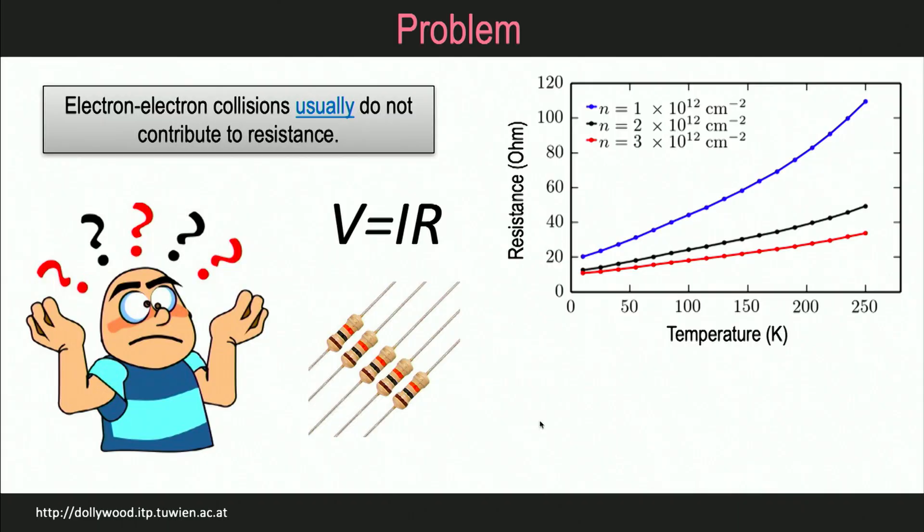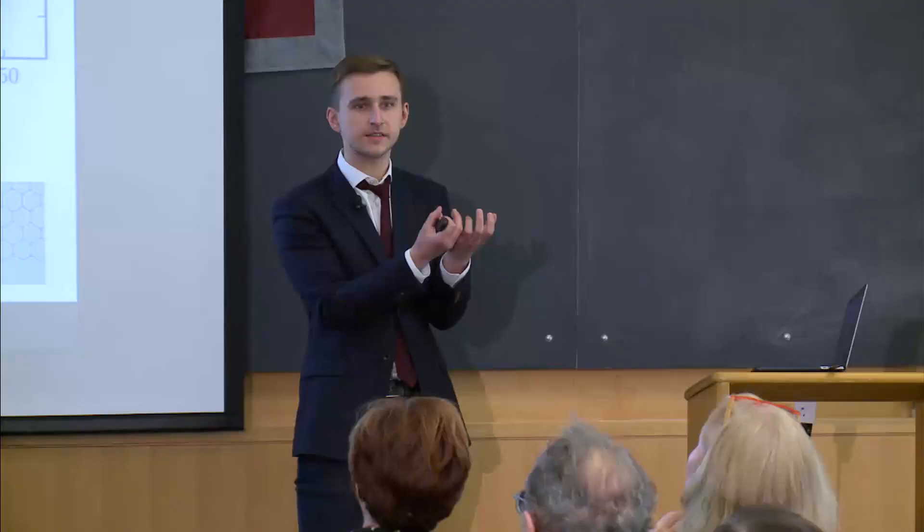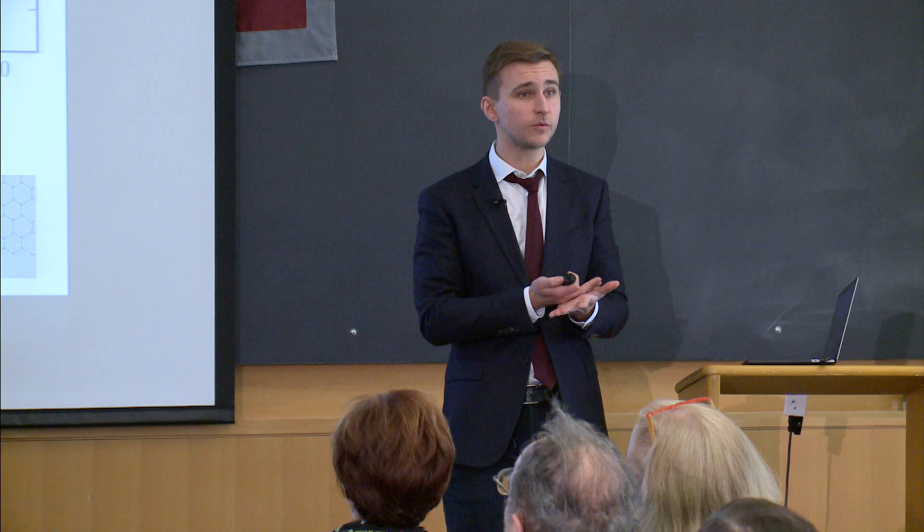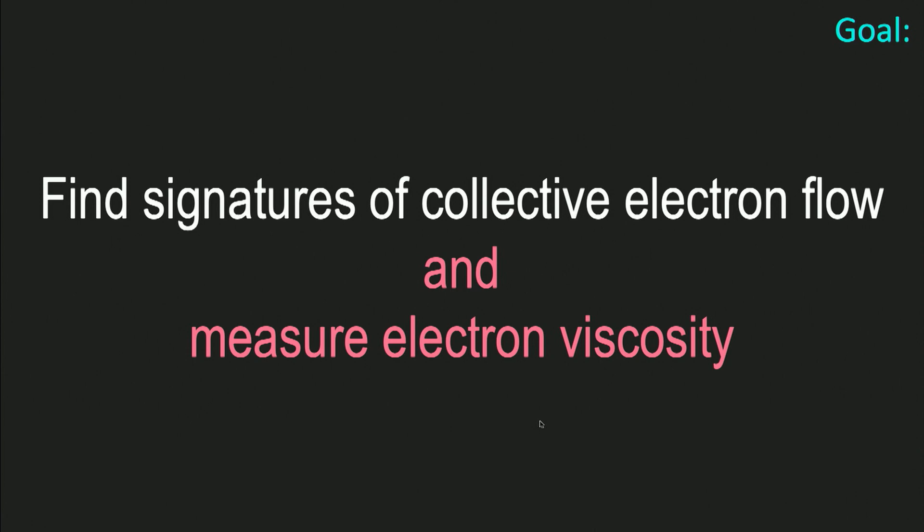Indeed, if you measure the resistance of conventional graphene device as a function of temperature, what you see is a monotonic increase, starting from 10 ohms per square at very low temperatures going to 20 to 30 ohms at room temperature. This smooth increase can be attributed to electrons scattering from the crystal vibrations, from the lattice vibrations which become prominent at higher temperatures. And here's the problem. So on the one hand, the theoretical expectations is that electrons should be moving as a quantum soup inside graphene channel. And on the other hand, all the tools which we have is the resistance which gives us very simple measurement. So we need to find an approach which will allow us to catch this correlated electron motion, to find signatures of collective electron flow and measure its viscosity.